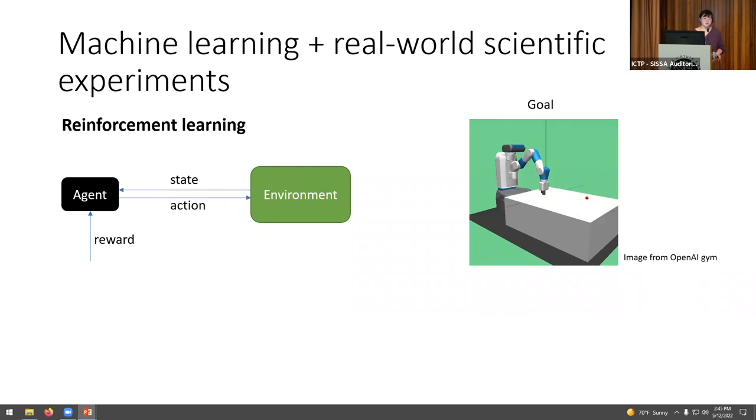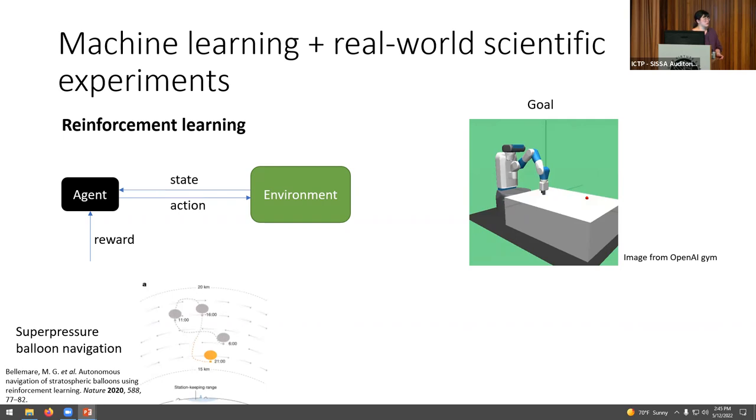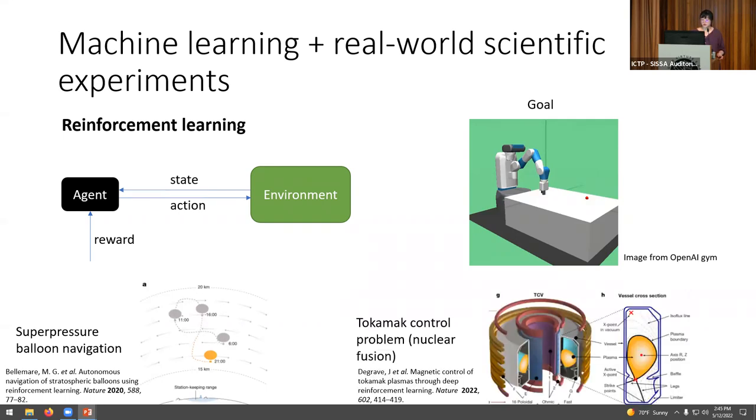Up to now, deep reinforcement learning has been mostly used in games or simulated environments because that's where it's easier to get training data. But recently, as deep reinforcement learning become more efficient and stable, they have also been used in some real world scientific experiments. For example, in this example, they use it to control super pressure balloons. And recently, there is also a work where they use it to control nuclear fusion experiments.